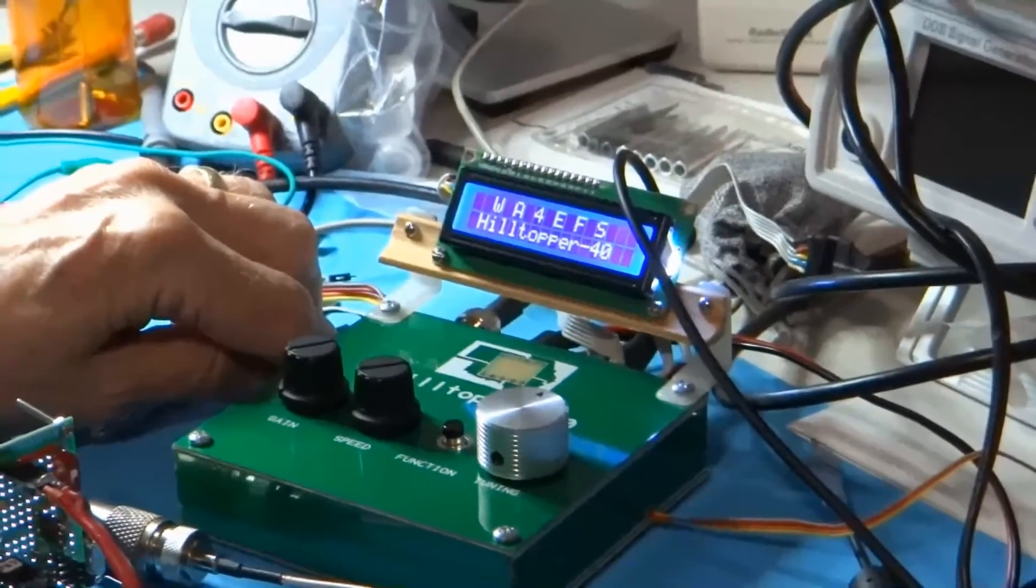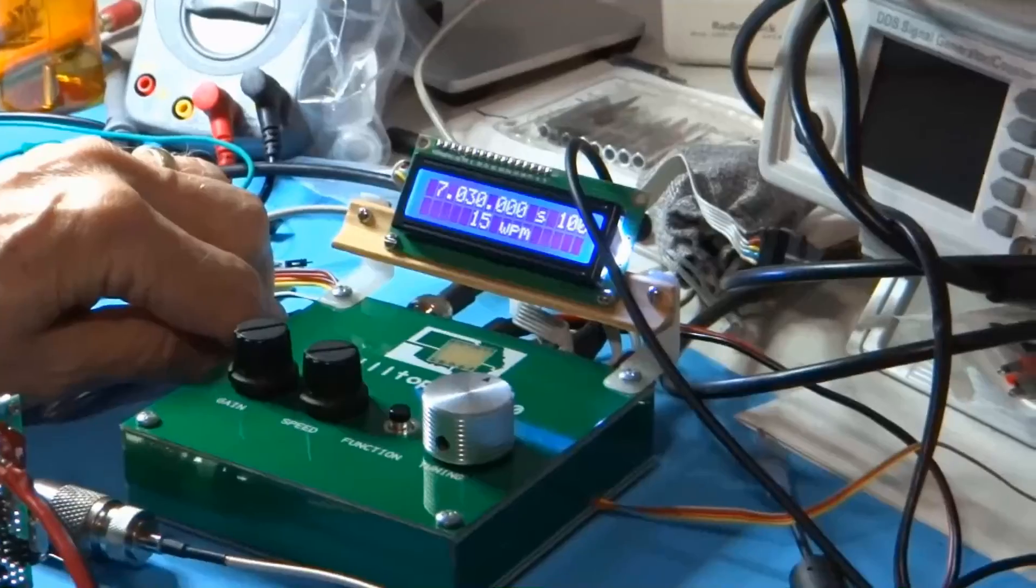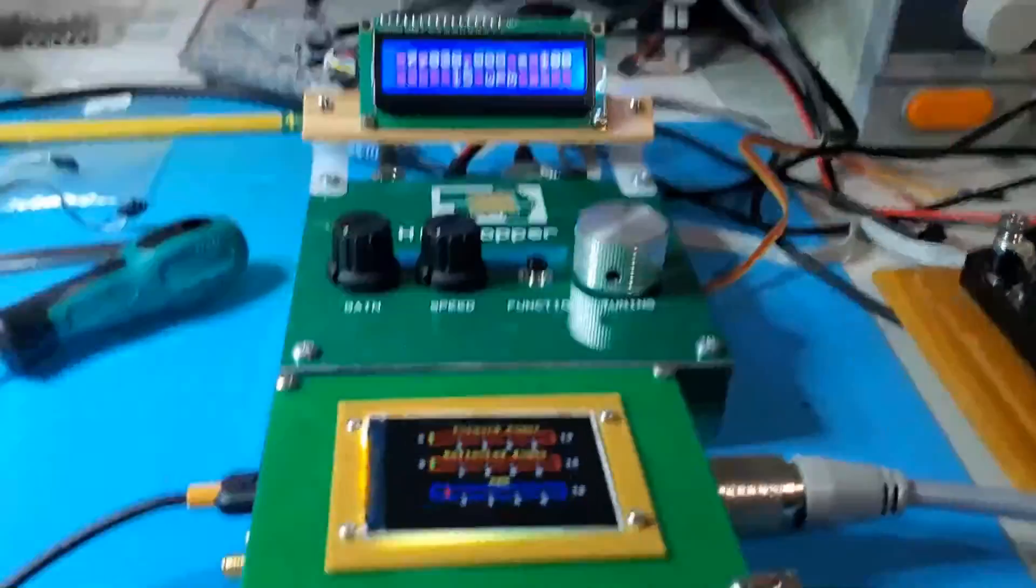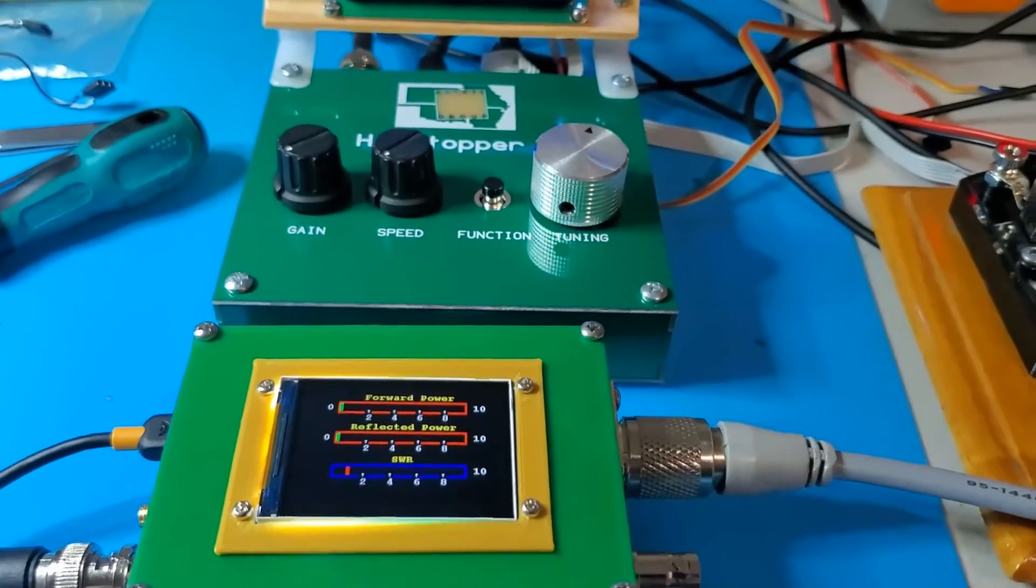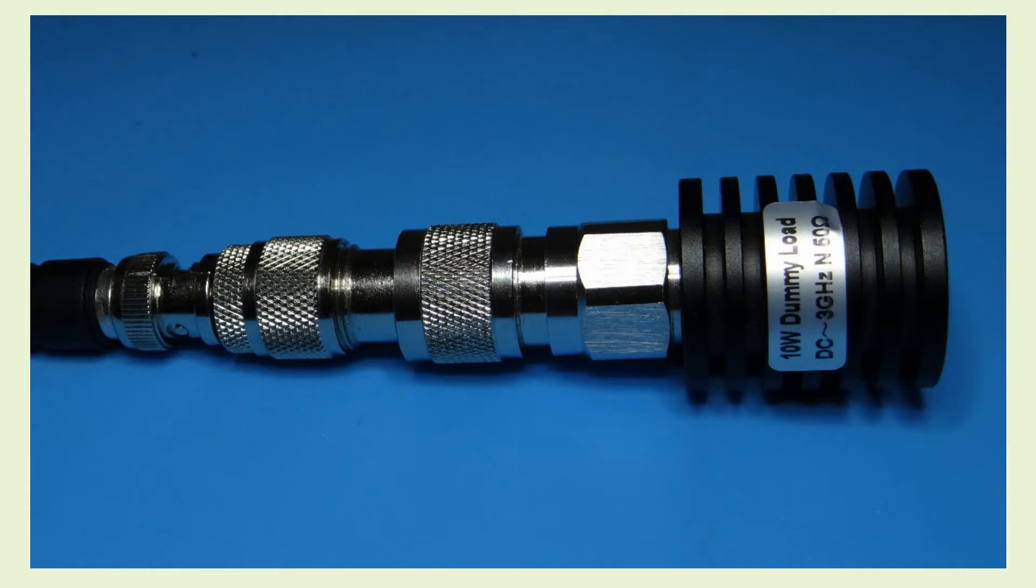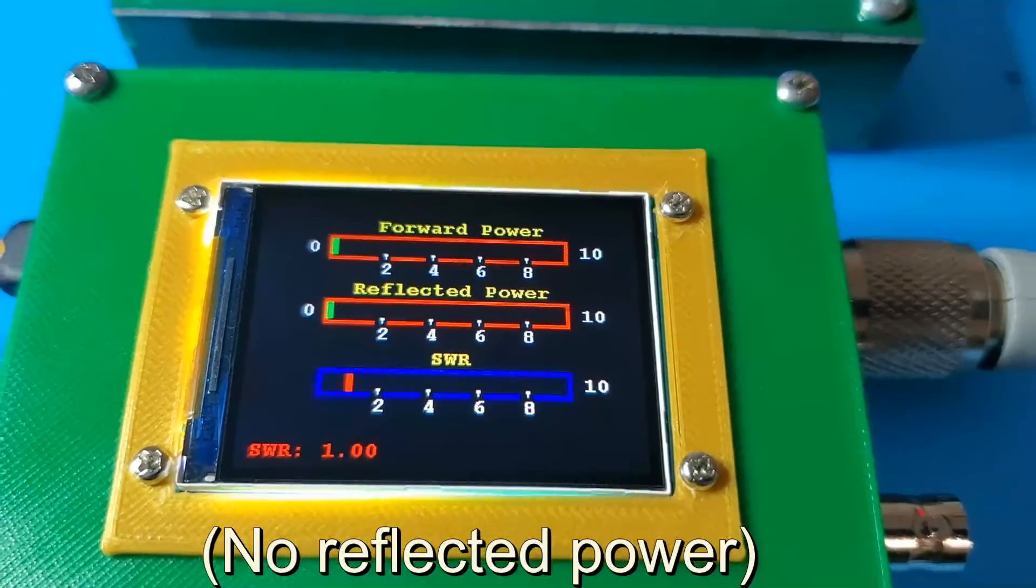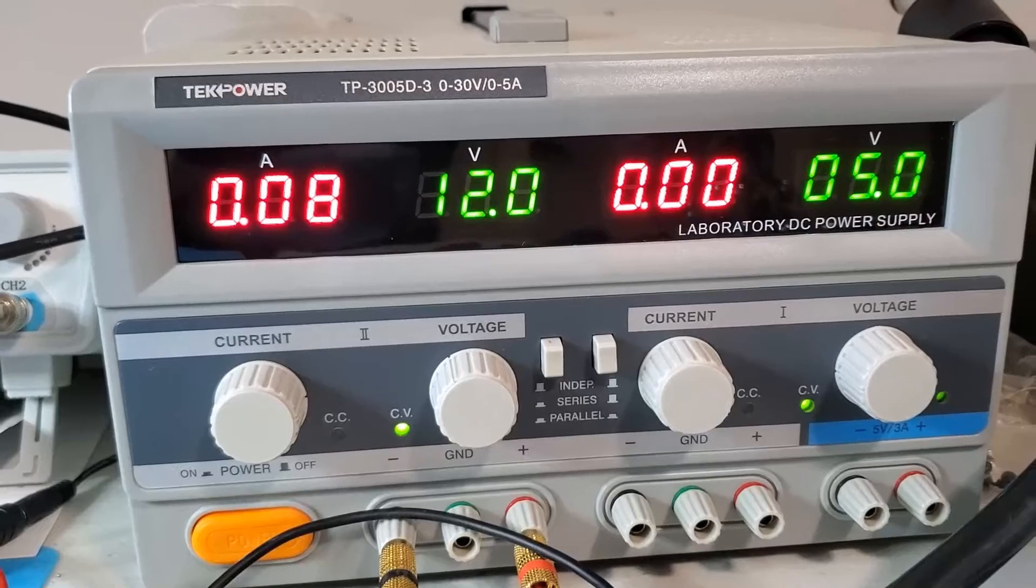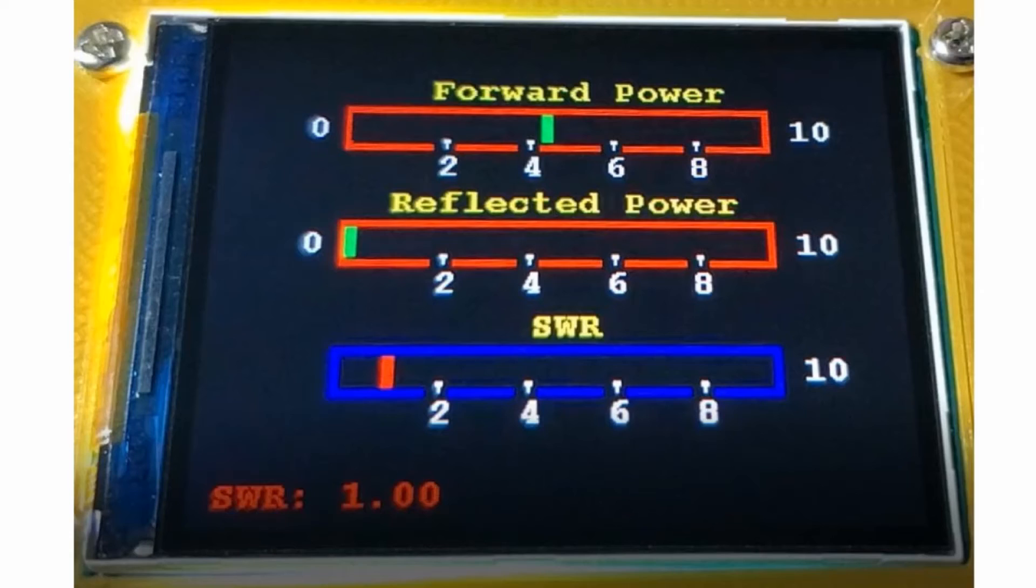This four-state QRP group Hilltopper transceiver has three BS-170 MOSFETs in the Class E final. For the demo, a 50-ohm resistive load is substituted for the antenna. The SWR should be one-to-one. With the 12 volts DC bench power supply, the RF output reads approximately 4 watts.